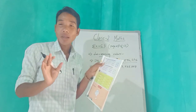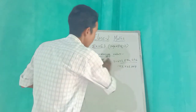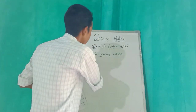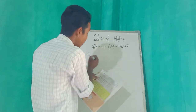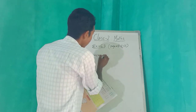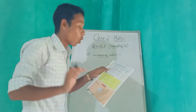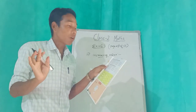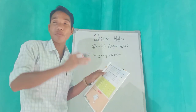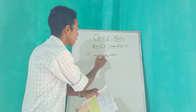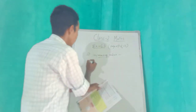Now I'm going to show number five. Number five: write in increasing order. Increasing order means from smallest to big — like ascending. From small to big, we have to arrange the given numbers. This is increasing order — from small to big.